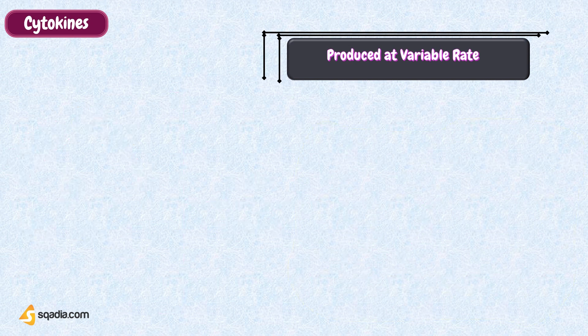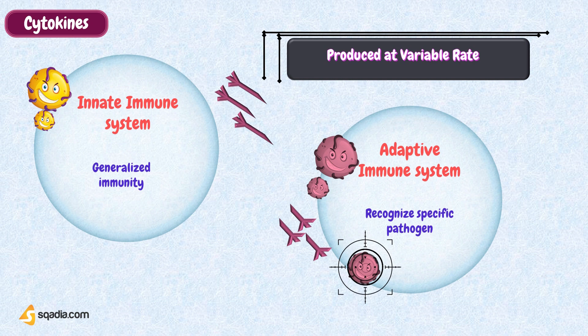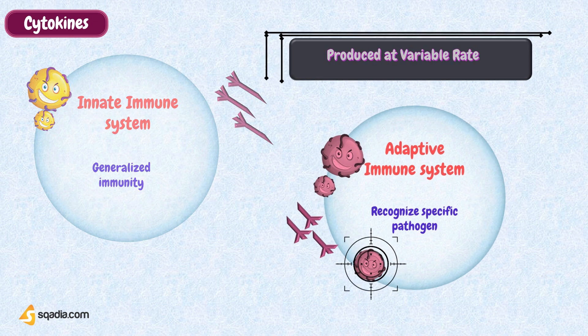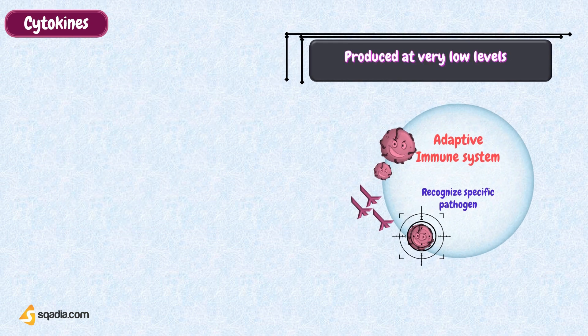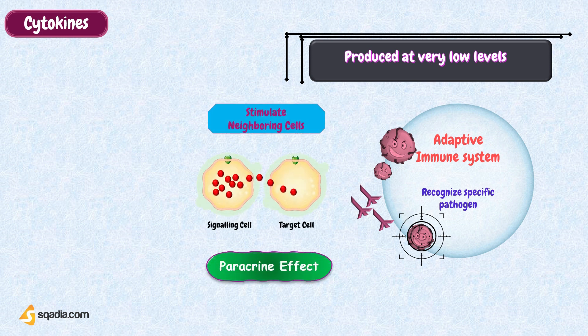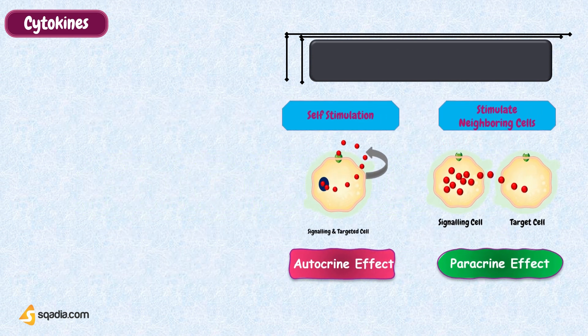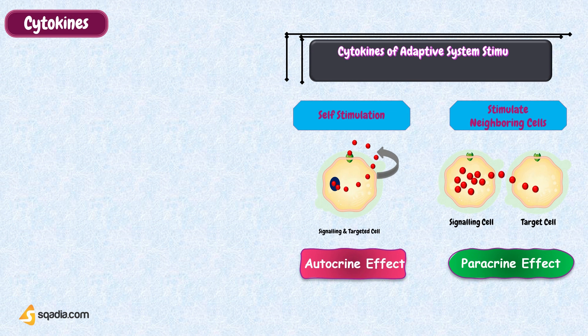Immunologists have also divided the cytokines as those of the innate system and the adaptive system. Adaptive immune system cytokines are secreted at very low levels and affect only neighboring cells — paracrine effects — or even the secreting cell itself — autocrine effects. This low-level secretion is to maintain the specificity of the adaptive immune system.